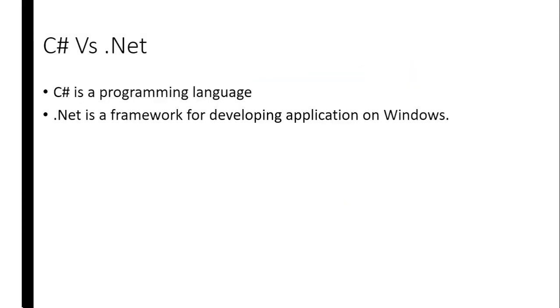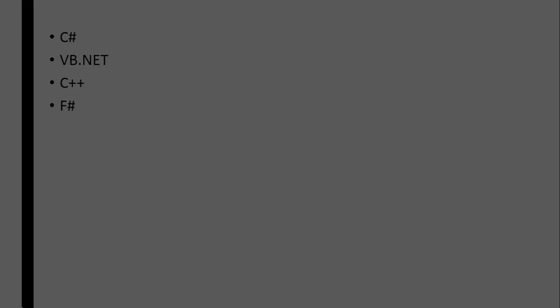So the difference between C-sharp and .NET: C-sharp is a programming language, while .NET is a framework for developing applications on Windows. It's not only C-sharp that uses the .NET framework — we also have other programming languages that use it. Examples include VB.NET, C++, and F-sharp.